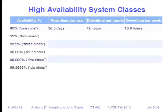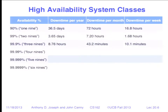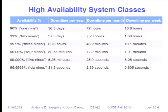Two nines is much better — down to three and two-thirds days per year, seven hours a month, and an hour and 40 minutes per week. Add another nine and we're down to just over one business day per year, 43 minutes a month, and 10 minutes per week. By the time we get to six nines, we're at 32 seconds of downtime for an entire year, three seconds in a month, and two-thirds of a second in a week.